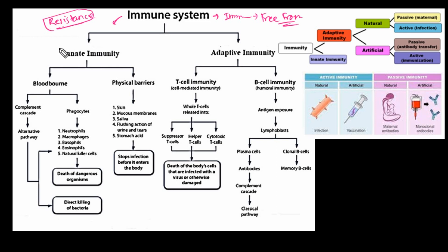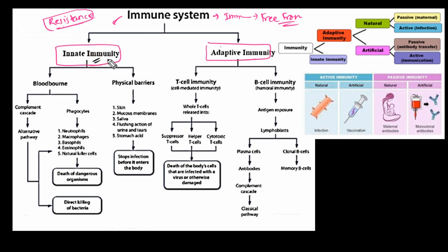On the basis of how we get it, immunity is classified into innate immunity and adaptive immunity. Innate immunity means the immunity which is already present in our body since birth. Before our birth, in fetal life, we get this immunity, and that is why it is called innate or natural immunity.